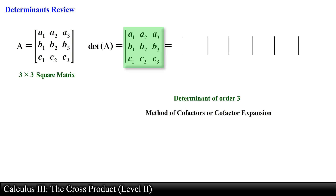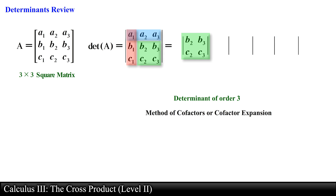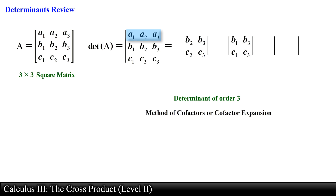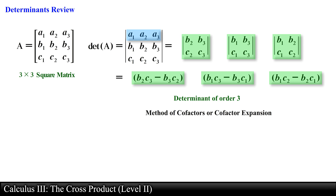Given a 3 by 3 square matrix, we find the 3 minors by generating three 2 by 2 square matrices by blocking the first row and systematically blocking each of the 3 columns. By blocking row 1 and column 1 we obtain the first 2 by 2 square matrix. By blocking row 1 and column 2 we obtain the second 2 by 2 square matrix. And by blocking row 1 and column 3 we obtain the final 2 by 2 square matrix. Now that we have 3 2 by 2 square matrices we find the minors by computing the determinant of each.